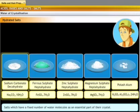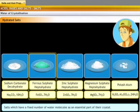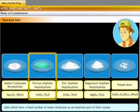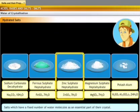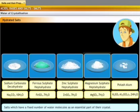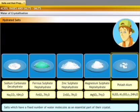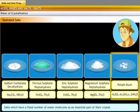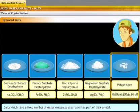For example, sodium carbonate decahydrate Na2CO3·10H2O, ferrous sulfate heptahydrate FeSO4·7H2O, zinc sulfate heptahydrate ZnSO4·7H2O, magnesium sulfate heptahydrate or Epsom salt MgSO4·7H2O, and potash alum which is a sulfate of potassium and aluminum with 24 water molecules K2SO4·Al2(SO4)3·24H2O.